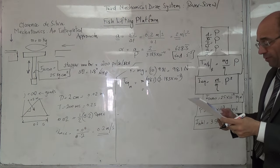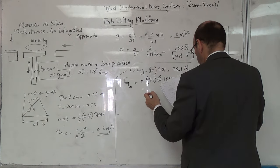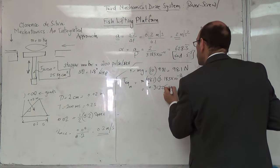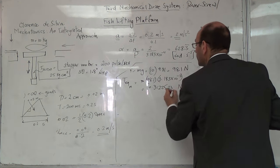So we get T equivalent equal to 0.3122523 newton meter.